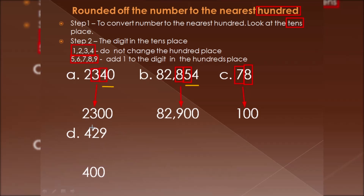Next is 429. The hundreds place is 4 and the tens place is 2. Since 2 is less than 5, we do not change the digit in the hundreds place — it remains as 4. The tens and ones places become zero. So the rounded number of 429 is 400.